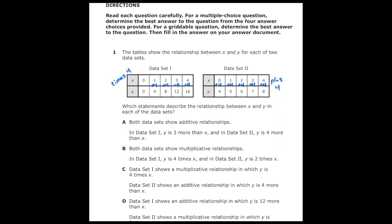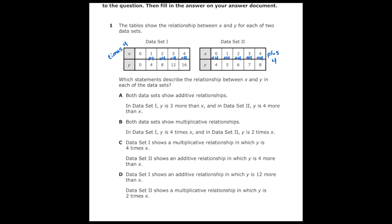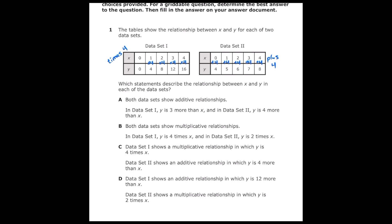Once I start looking at the answer choices, letter A says both data sets show additive relationships. Well that's not true because the first data set is multiplying, it's not adding, so that's not going to be correct. Letter B says both data sets show multiplicative relationships, and that's not true. The second data set is adding.